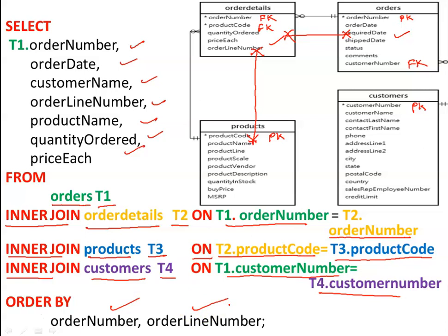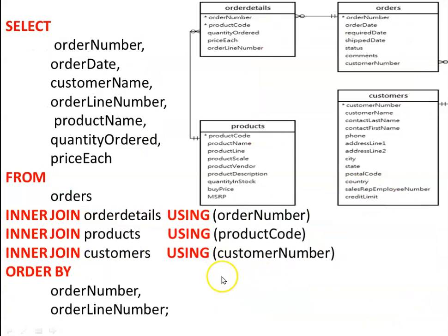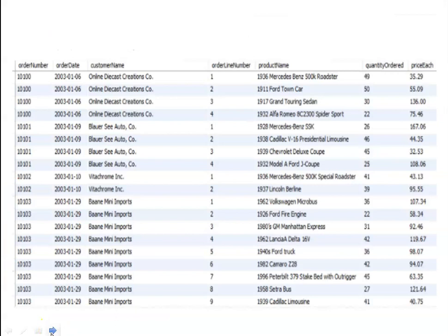We can simplify this query by using natural join syntax with the USING keyword instead of explicit join conditions. All the join conditions will be replaced: USING (order_number), USING (product_code), USING (customer_number). This is applicable only when the attribute names are the same in both relations. The simplified query will look something like this.